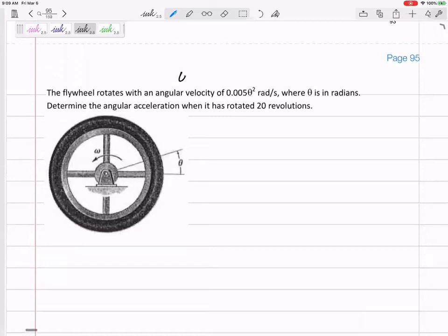Given an equation for angular velocity, 0.005θ squared. Determine the angular acceleration. I'm given the angular velocity and I want to find the angular acceleration. Is that a derivative or an integral? Given velocity and you want to find acceleration, that's a derivative.